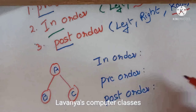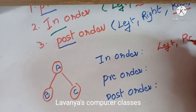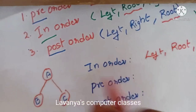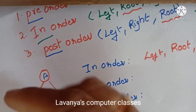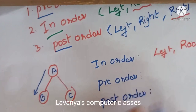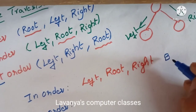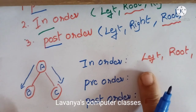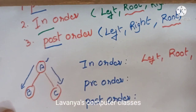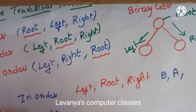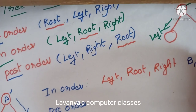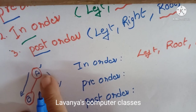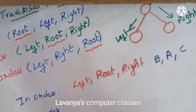For in-order traversal, the order is left, root, right. First travel the left-hand side — the left child is B. Then visit the root, which is A. Then go to the right-hand side, which is C. So in-order traversal gives B, A, C.